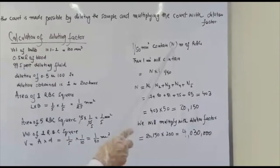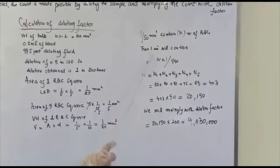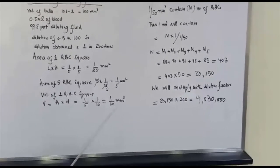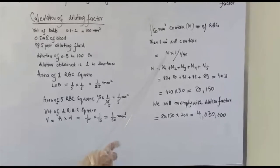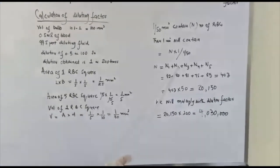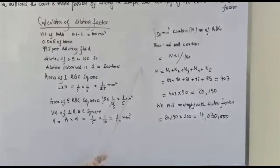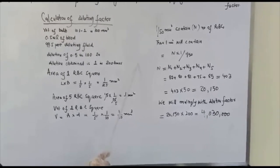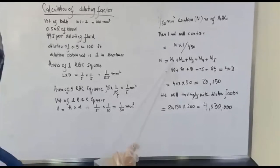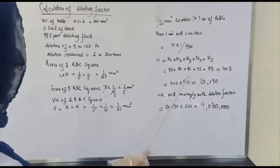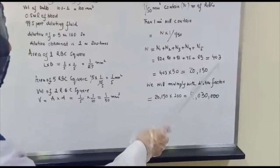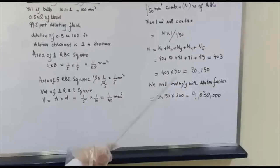So 1/50 cubic millimeter contains n number of RBCs. We have to calculate this number. Then 1 millimeter square will contain n times 50. N equals n1 plus n2 plus n3 plus n4 plus n5. In the large RBC square, we calculate 4 corner squares and one central square. I have counted the RBCs under microscope: first chamber 82, second 80, third 81, fourth 75, fifth 85, totaling 403 RBCs.